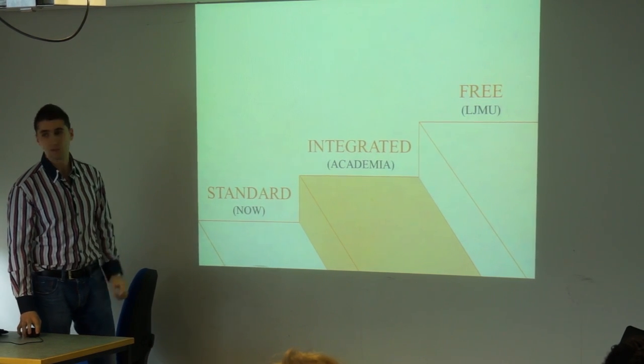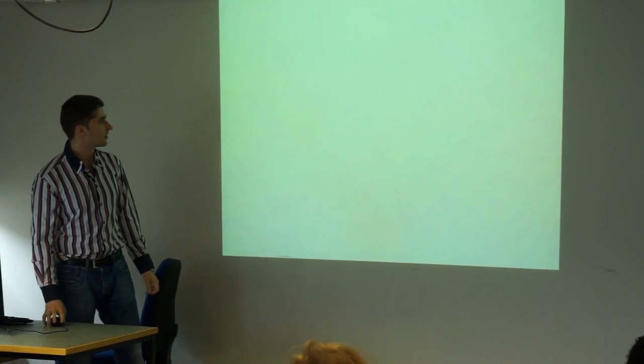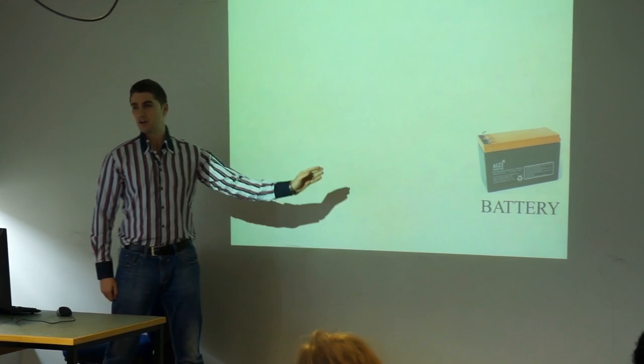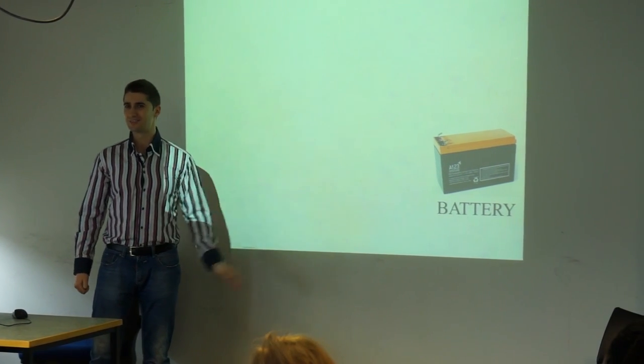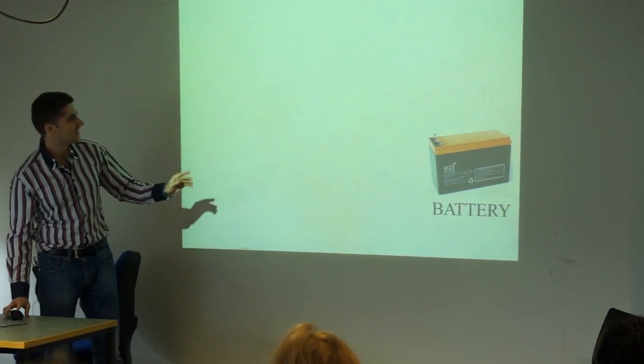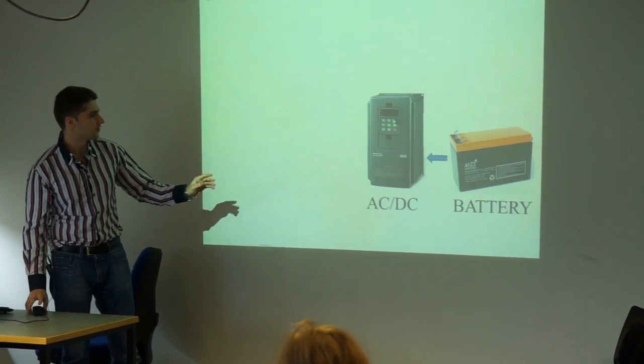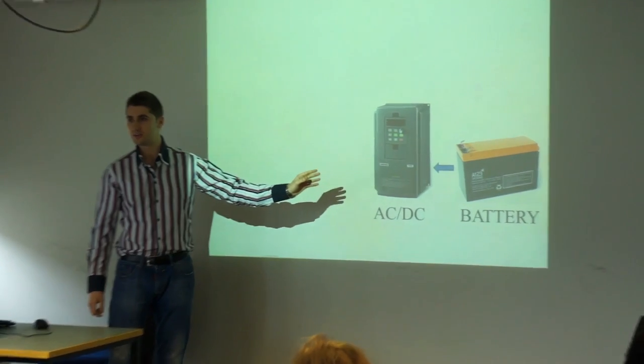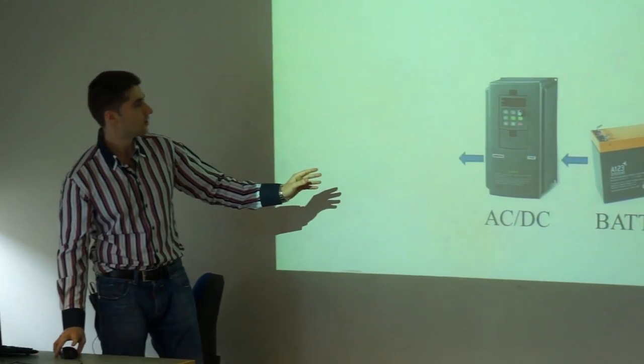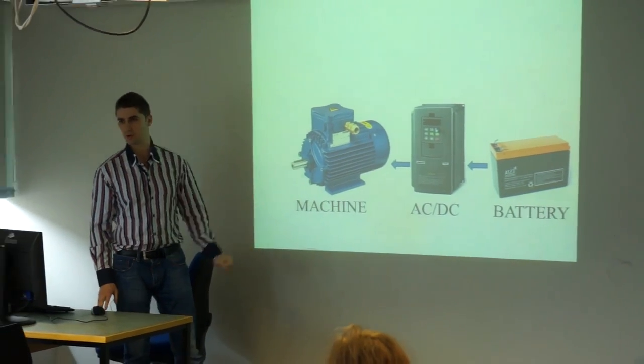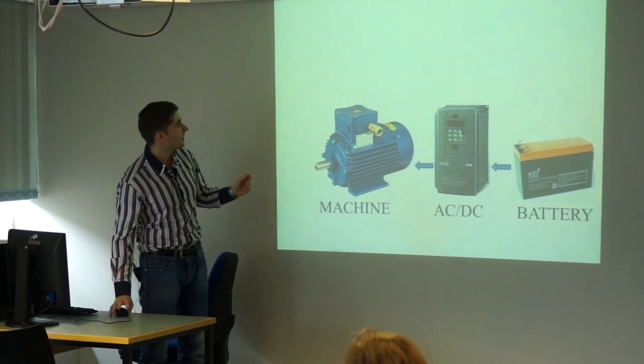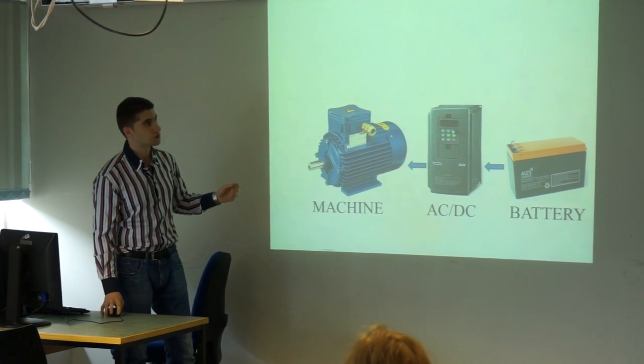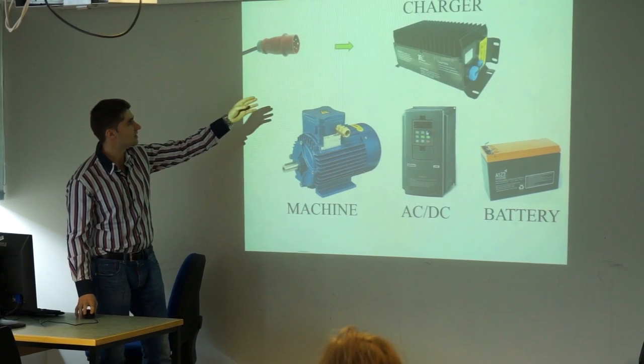Every electric vehicle, first of all, has to have a battery. Then it has a converter which converts DC voltage of a battery into AC voltage which supplies a motor. And if it has an on-board charger, then that charger is a standalone device.